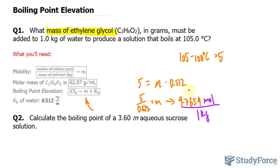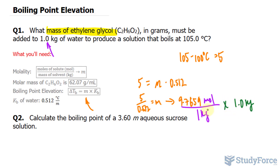The next thing I'll do is multiply this number by the mass of the solvent. By multiplying this number by the mass of the solvent — the water, which is 1.0 kilograms — we have the moles of the solute exclusively. I'm going to multiply this by 1.0 kilograms; this unit and this unit cancel out. We can do that because 1 kilogram represents the mass of the solvent.